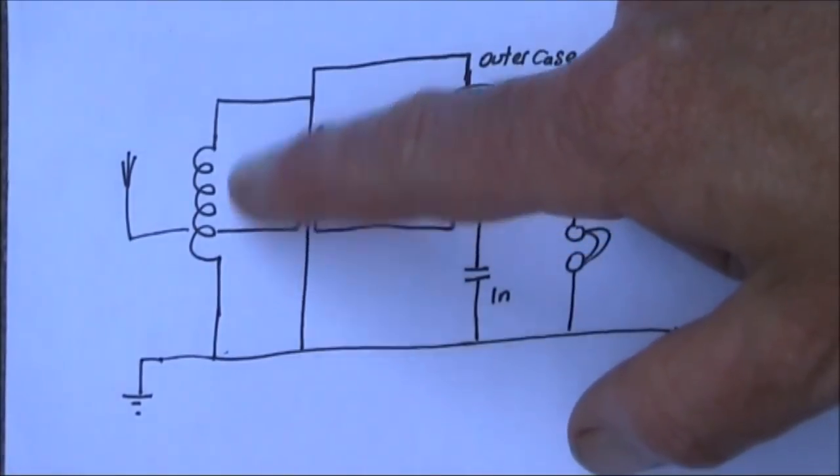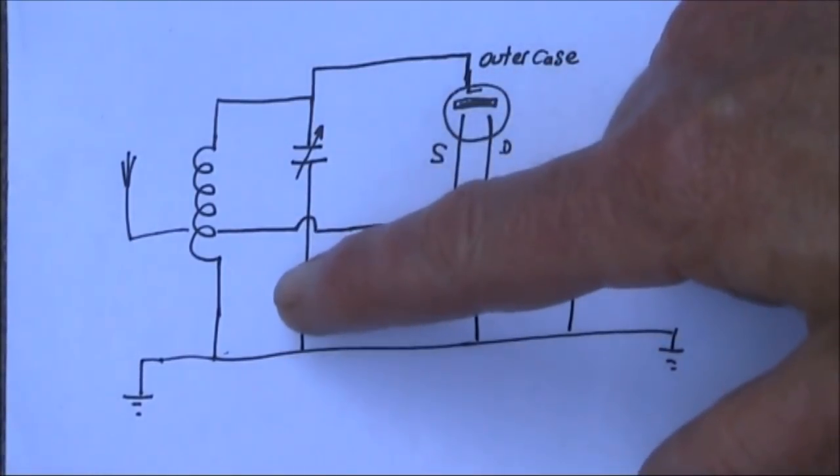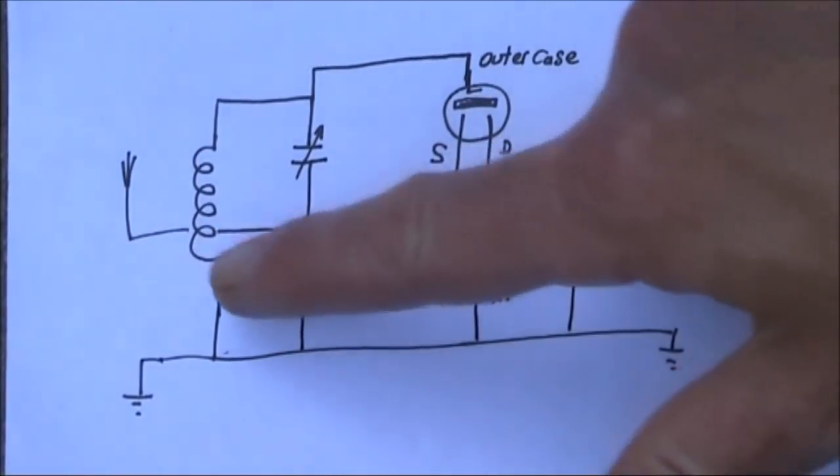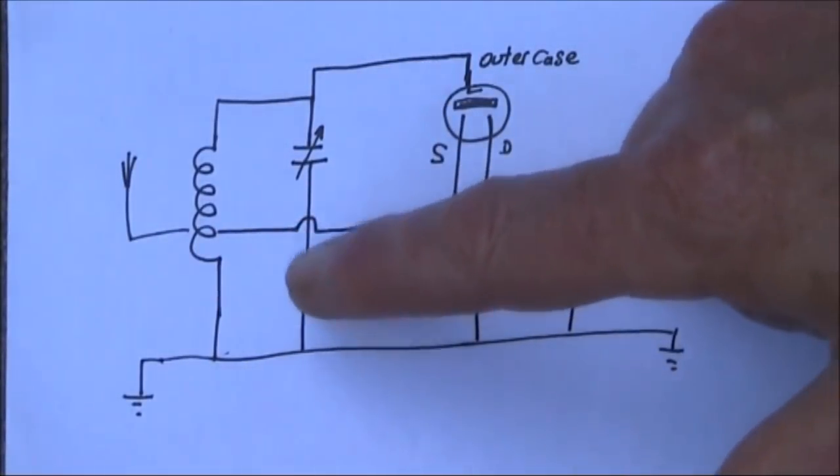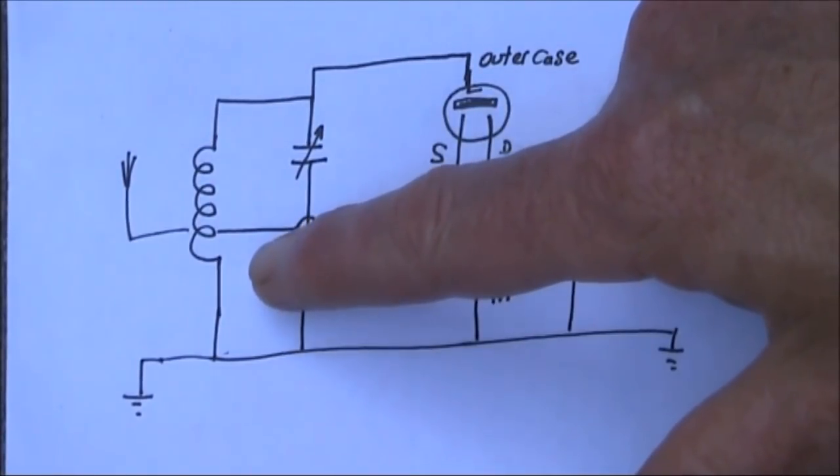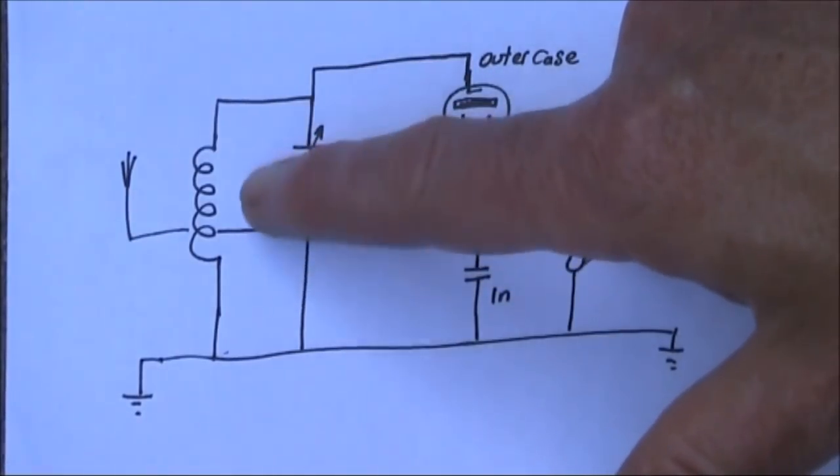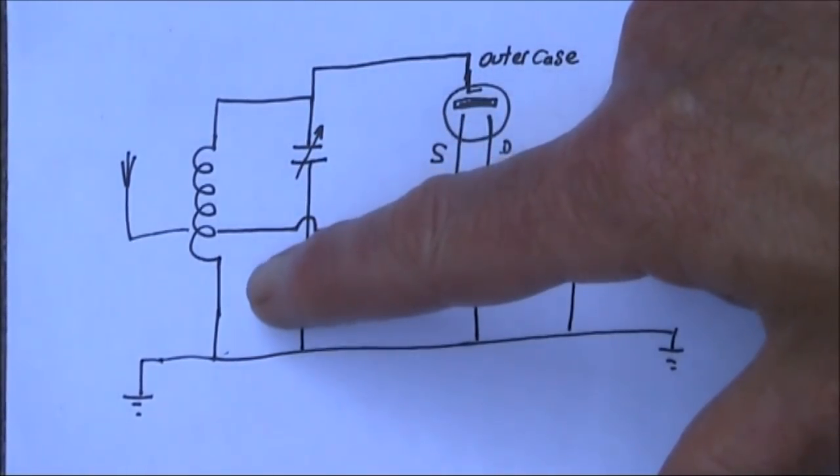There need to be taps along it because the performance of the crystal set is very strongly affected by where you tap both the antenna and the detector. With my particular set I find I get best performance with the tap about 10 or 20 percent of the total number of turns above the earth side of the coil.